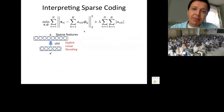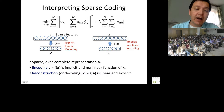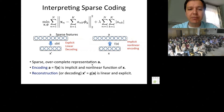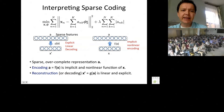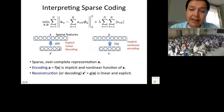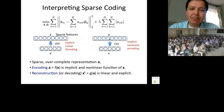We can interpret sparse coding as having explicit linear decoding where the representation is sparse and typically overcomplete — meaning K, the number of bases, is larger than D, the input dimensionality. Decoding is explicit and linear: given the coefficients, multiply by the bases to get the data vector X. But the encoding from X to A is implicit — it requires solving a lasso problem to find the sparse coefficients. This brings us to a generalization: the autoencoder.